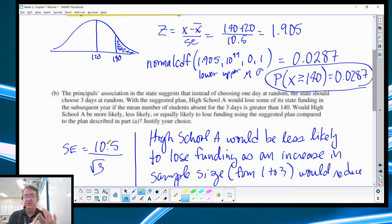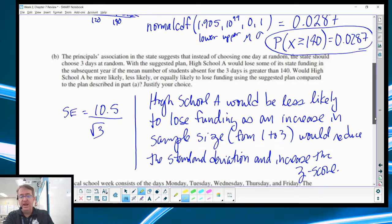So would the high school A be more likely, less likely, or equally likely to lose funding using the suggested plan compared to what we did back up in part A? What's going to change if we do a three-day average? Is my 140 going to change? No. Is my 120 going to change? No. So what else is left? Is the standard deviation going to change? There you go. Well, because remember what ends up happening, your standard deviation is going to go from 10.5 to 10.5 divided by the square root of 3. And so that's going to tighten up that curve.